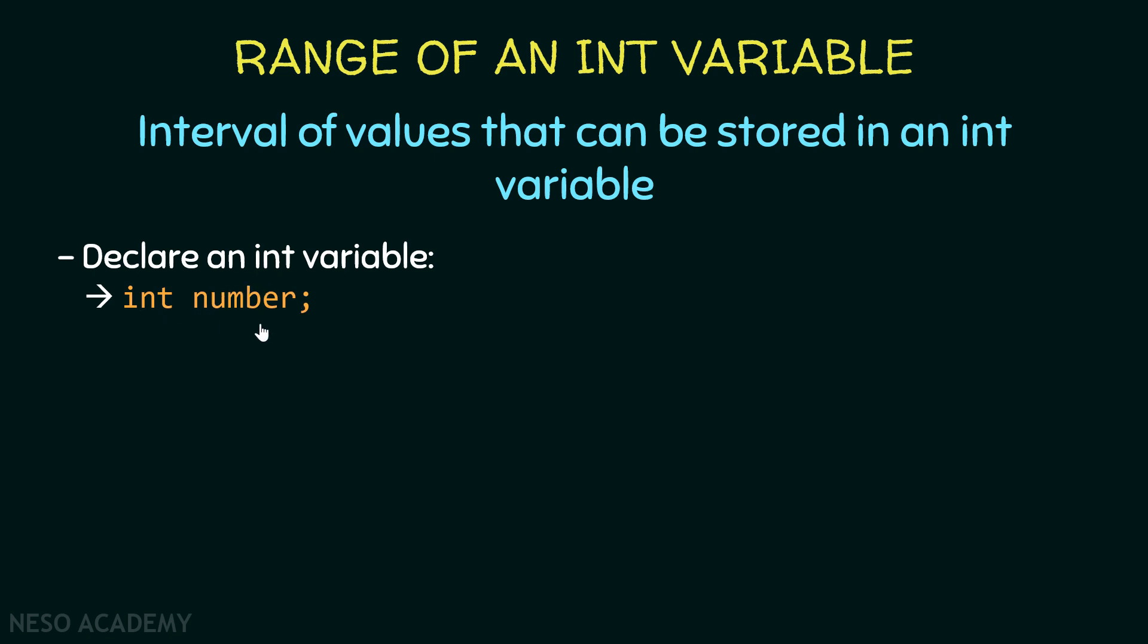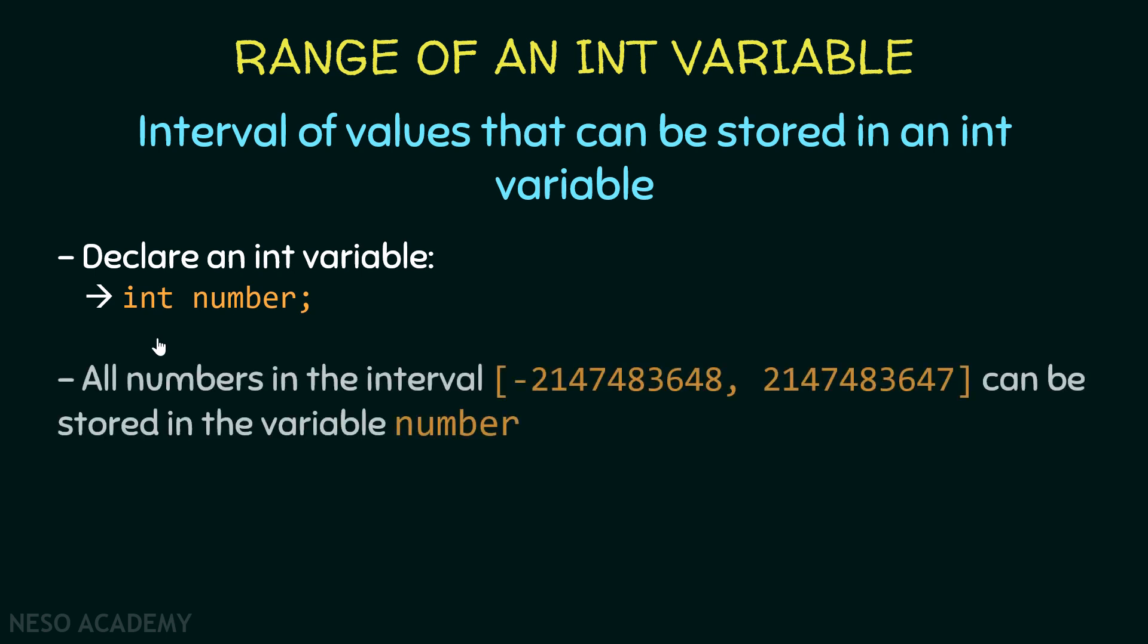So now this variable is called number and we can store integers inside it. Now you might ask, what is the minimum and what is the maximum value that I can store inside an integer? So this is the range. So this over here is the range of an int variable. All numbers in this interval can be stored in the variable number.